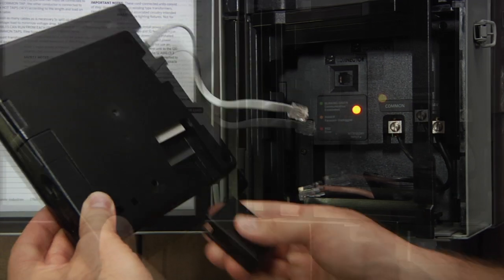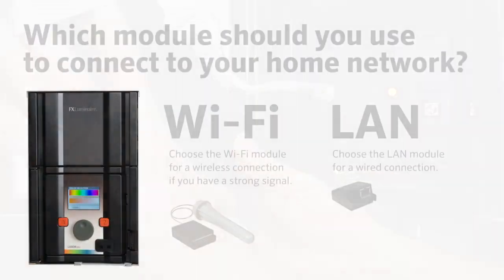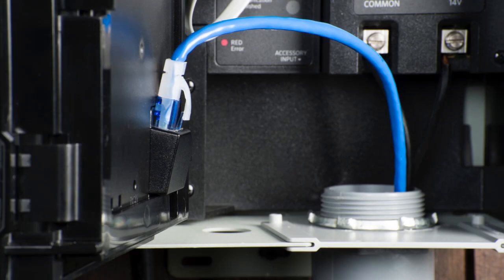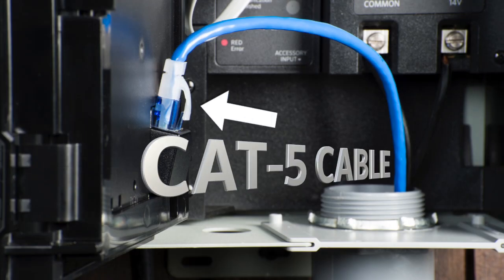It is interchangeable with the existing Wi-Fi module and which one you choose depends on your site. For areas with limited Wi-Fi signal or strength, choose the LAN module for a permanent and reliable connection. The LAN module uses a Cat5 cable to connect the Luxor to your home Wi-Fi network.